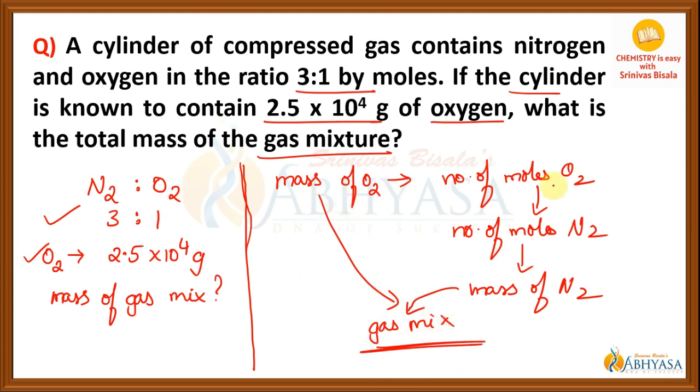I repeat, convert the mass of oxygen into number of moles of oxygen. Then, you will get the number of moles of nitrogen. And convert the number of moles of nitrogen into mass of nitrogen. Then, add both the values, you will be getting the mass of the gaseous mixture. So if you understood at least the hint for this numerical, you can stop the video and solve it now. Otherwise, keep watching.